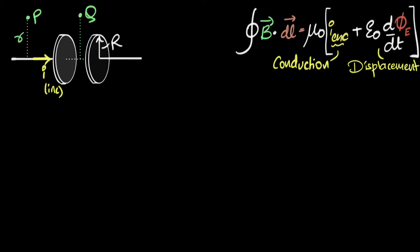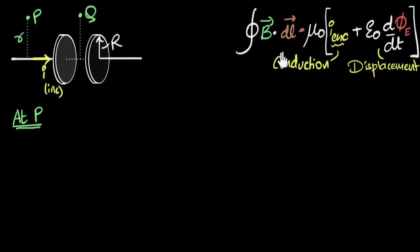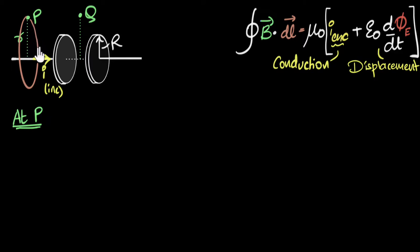Let's go ahead and put this equation to the test by calculating the magnetic field at point P and point Q. Starting with point P: just as with Ampere's law, the first step is to choose an Amperian loop — a closed loop — that passes through point P. We'll choose a circular loop because of the nice circular symmetry. That's also why we chose a circular plate capacitor, to make these calculations easier.